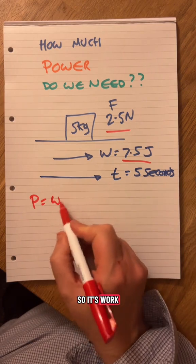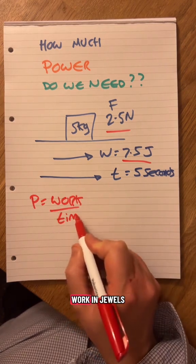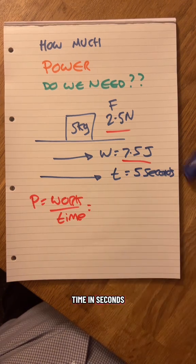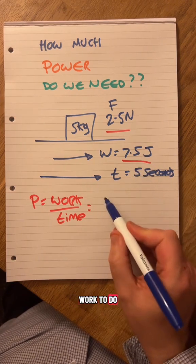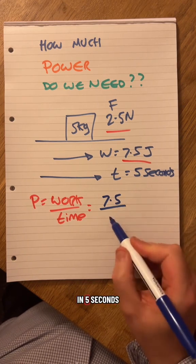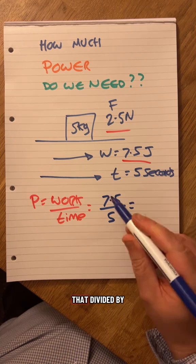Power is how fast you do work, so it's work divided by time. Work is in joules, time in seconds. I've got my work to do all that is 7.5 joules. I'm doing it in 5 seconds. That divided gives me...